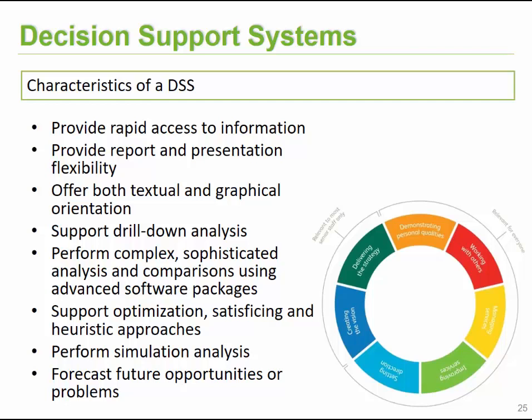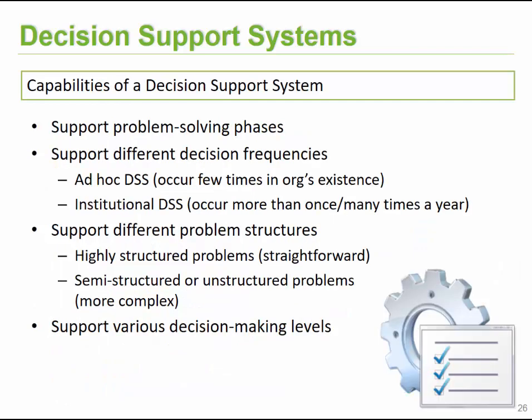Decision support systems support various problem-solving phases and decisions based on various frequencies. For example, ad-hoc systems handle decisions that only occur a few times in an organization's existence — only when something unusual happens. Institutional decision support systems handle decisions that typically occur multiple times a year or perhaps once a year.